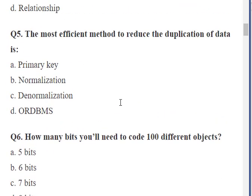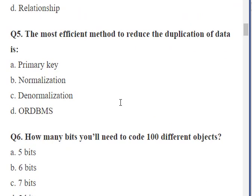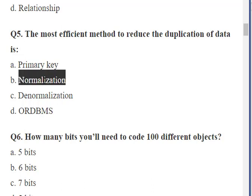Question number five: 'The most efficient method to reduce the duplication of data is ___' with options: primary key, normalization, denormalization, and DBMS. The correct answer is normalization, because it is the method of breaking tables into smaller ones so that you can eliminate data duplication and enhance data integrity.